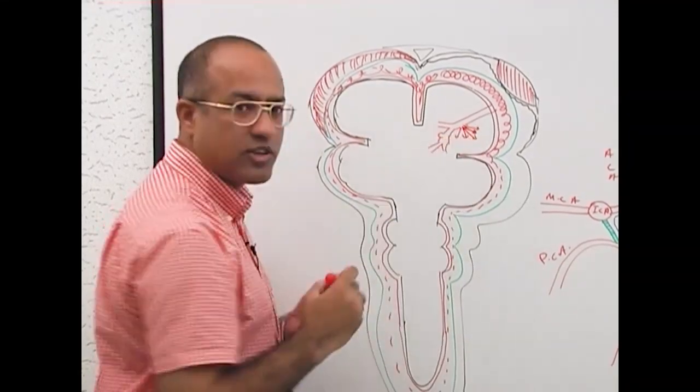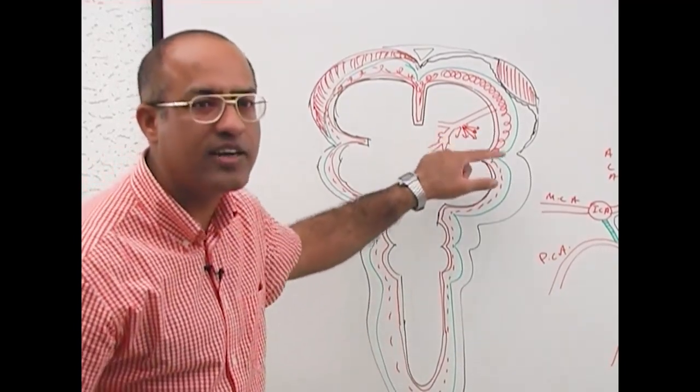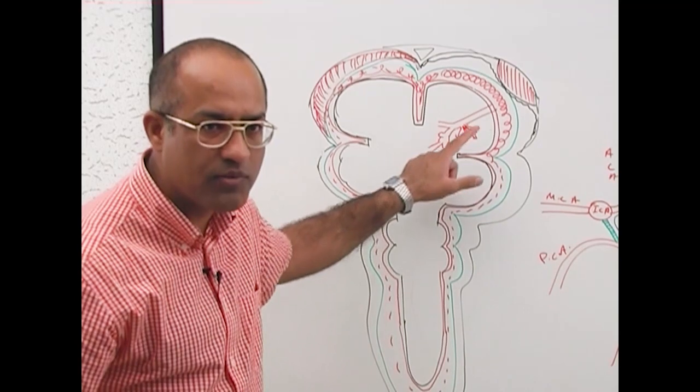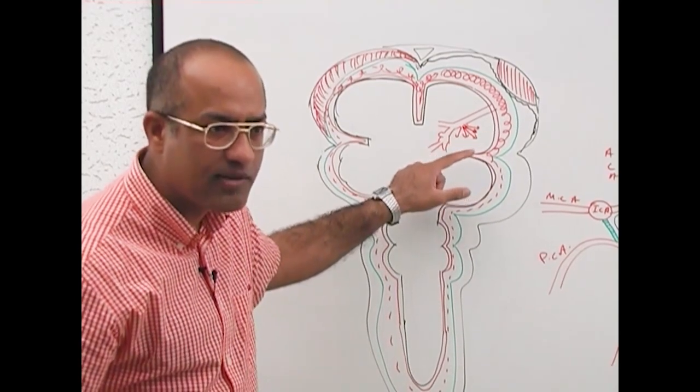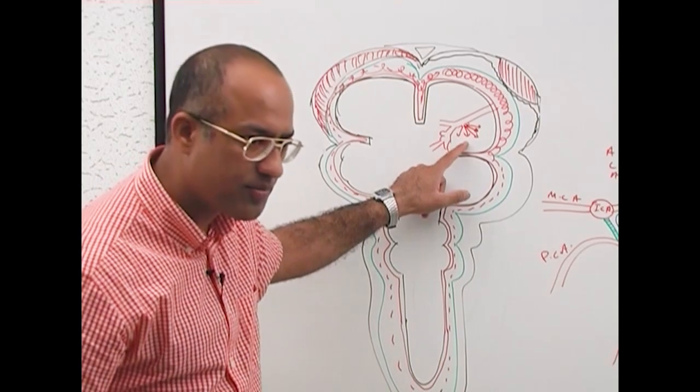Intracerebral. Special feature of intracerebral hemorrhage is that it will lead to neurological deficit. The neurological function of that part of the brain will be lost which is suffering by this hemorrhagic event. Am I clear?